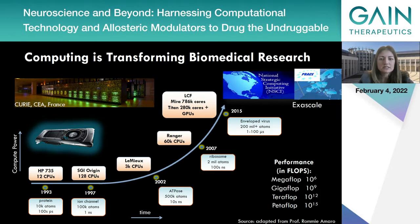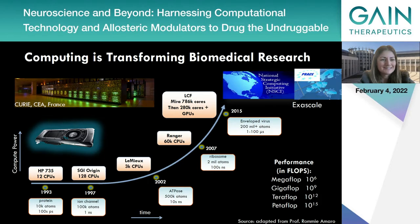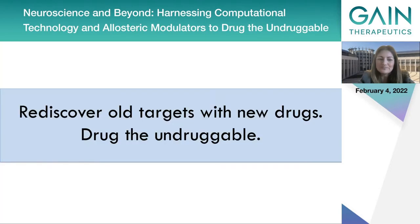In 2015, an enveloped virus of 200 million atoms was already being simulated, and we are now leading to even more powerful computing with the exascale era just on the verge. How can we use this technology to rediscover known targets with new drugs, but also to drug proteins that have been considered undruggable?